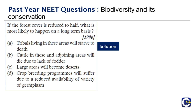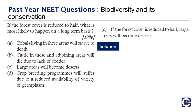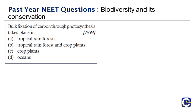Next question: if forest cover is reduced to half, what is most likely to happen on a long-term basis? The options include tribals starving, cattle dying, large areas becoming deserts, and crop breeding programs suffering. When forest areas reduce, trees, plants, shrubs, and species are destroyed — the land simply becomes desert with no growth. Therefore, the right answer is option C — large areas will become deserts.